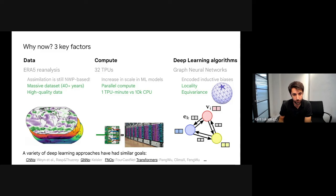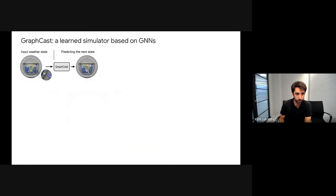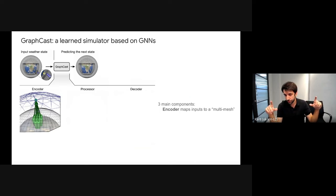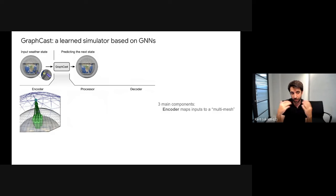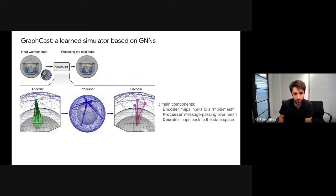GraphCast receives an input weather state and predicts the next state six hours ahead. It consists of three parts: an encoder that maps from the grid — a rectangular image that doesn't account for spherical geometry — up to a mesh, informing nodes locally. Then a processor propagates information around the mesh and predicts a latent vector for the next weather state. Finally, a decoder maps from the mesh back to the grid where predictions are needed.